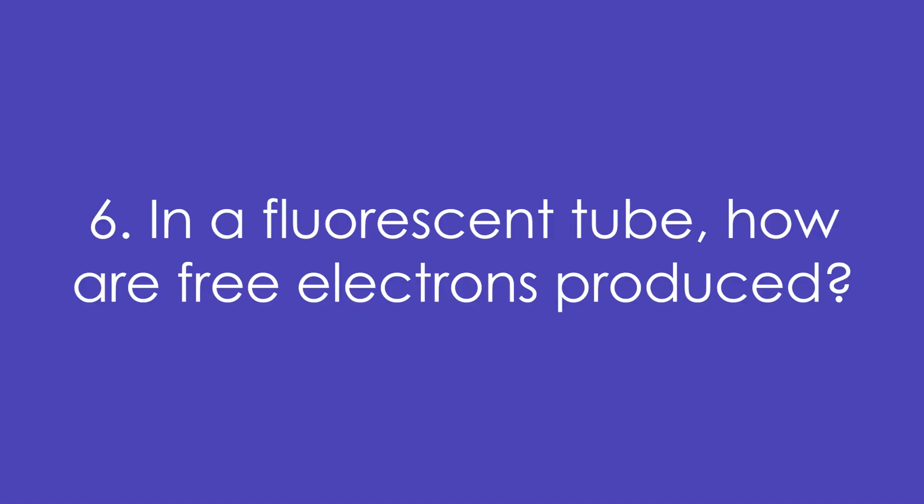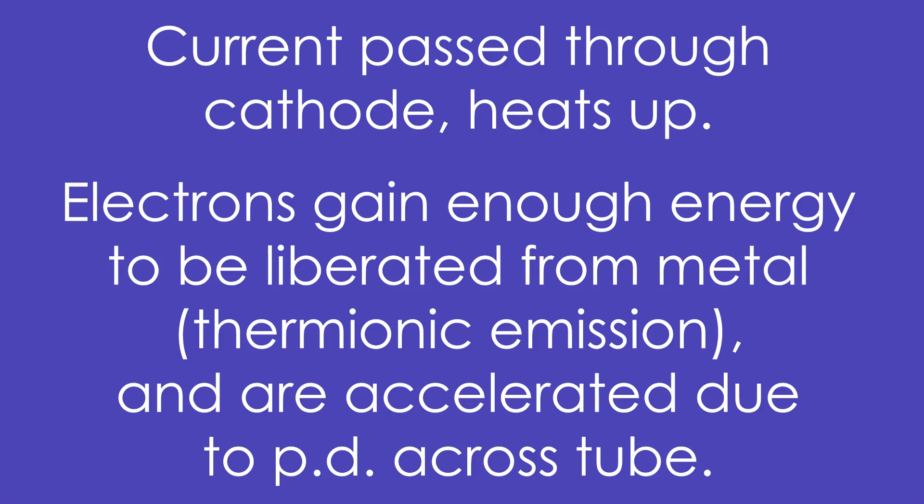Six, in a fluorescent tube, how are free electrons produced to begin with? A current is passed through the cathode metal filament and it heats up. The electrons gain enough energy to be liberated from the metal, we call this thermionic emission, and are accelerated due to the PD that has been set up across the tube.